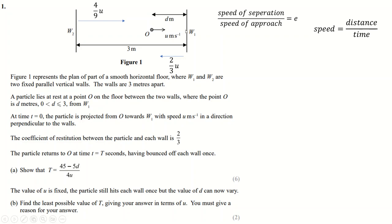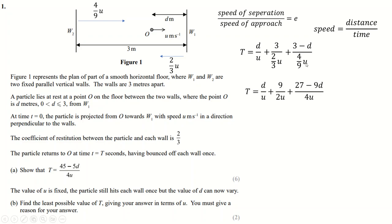The time for the first part is distance D over speed U, so D over U. The time for the second part is distance 3 over the speed two-thirds U. The final part has distance three minus D and speed four-ninths U. We can simplify these fractions and make all the denominators the same by multiplying accordingly, then put all these together and get exactly what they wanted. Good — six marks, nice and easy.